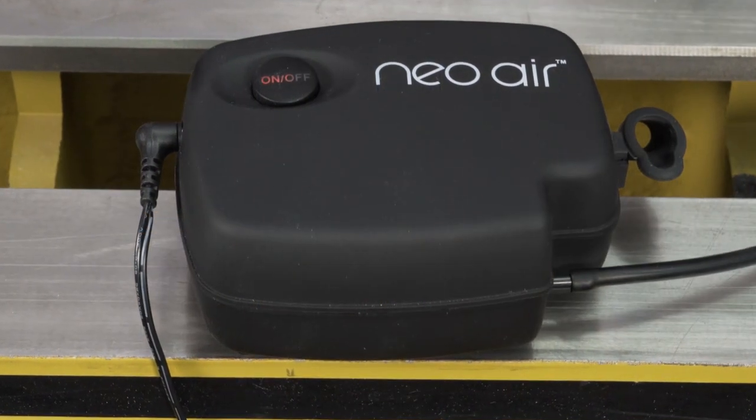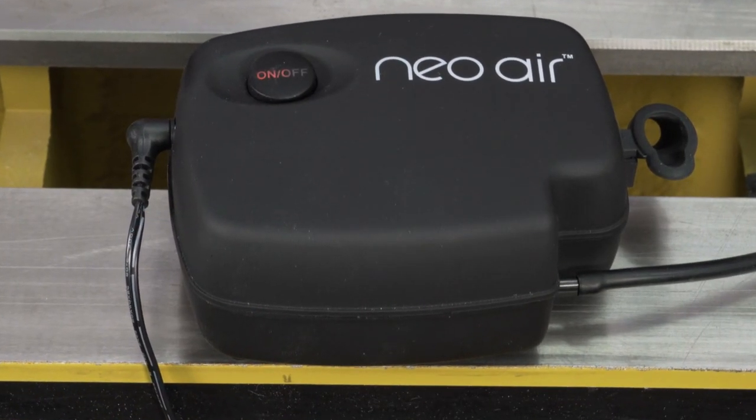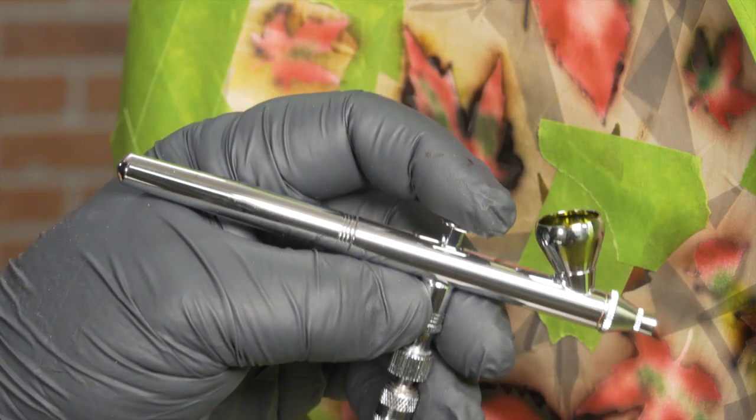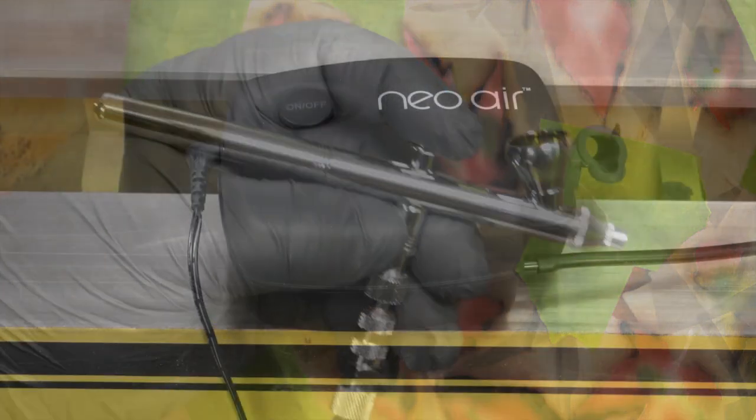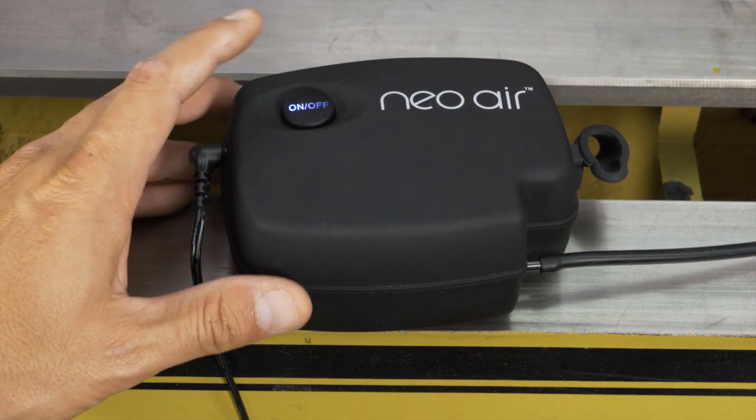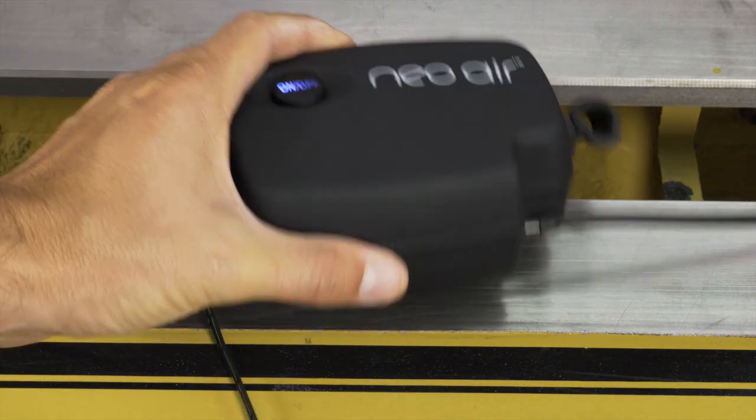The NEO Compact Airbrush Compressor is the perfect companion for your NEO Gravity Feed Airbrush. Although it's ultra-compact, it's almost silent and weighs less than a pound.